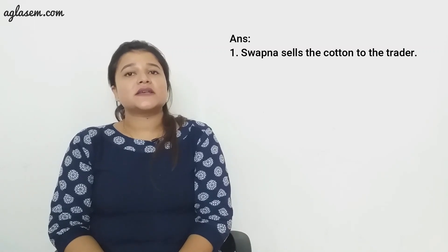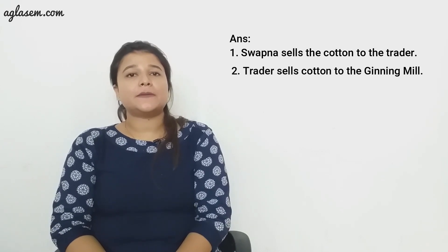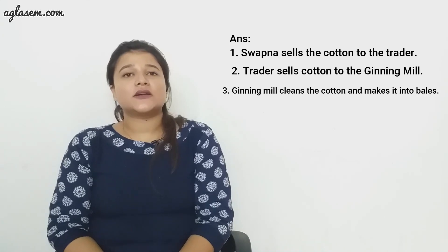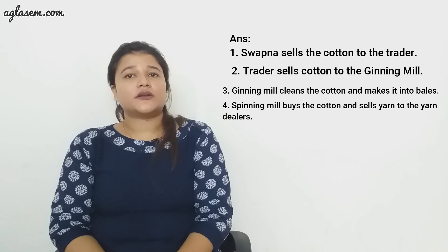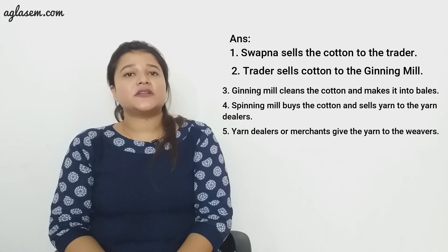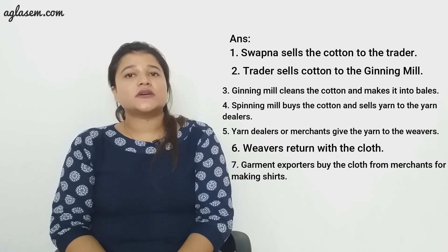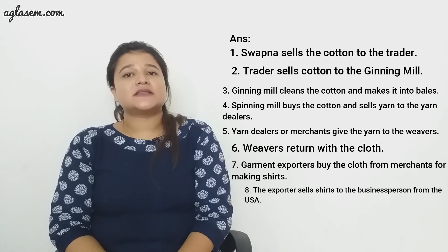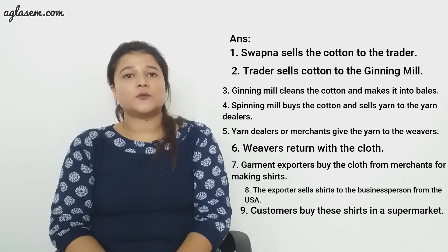The correct order is shown on the screen. First, Sapna sells the cotton to the trader. Second, the trader sells cotton to the ginning mill. Third, the ginning mill cleans the cotton and makes it into bales. Fourth, spinning mills buy the cotton and sell yarn to the yarn dealers. Fifth, yarn dealers or merchants give the yarn to the weavers. Sixth, weavers return with the cloth. Seventh, garment exporters buy the cloth from the merchants for making shirts. Eighth, the exporter sells shirts to the business person from the USA. Ninth, customers buy these shirts in a supermarket.